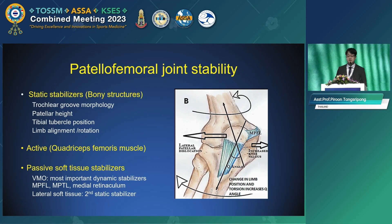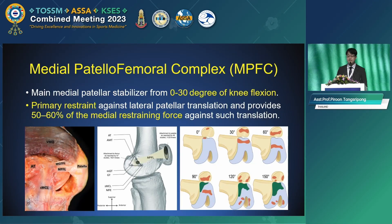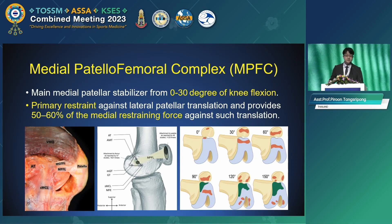Passive soft tissue stabilizers include the MPFL, MPTL, medial retinaculum, and lateral soft tissue as secondary static stabilizers. The medial patellofemoral complex (MPFC) consists of the MPFL and MQTFL. They act as the main medial patella stabilizers from 0 to 30 degrees of knee flexion, providing 50 to 60% of medial restraining force against lateral translation.